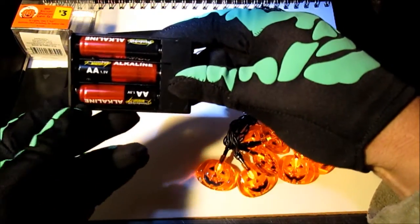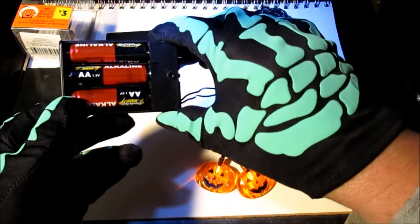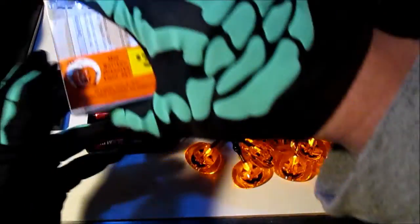Little battery box holds three double A's. These are at a dollar store. They're three dollars each.